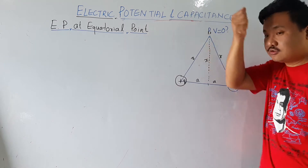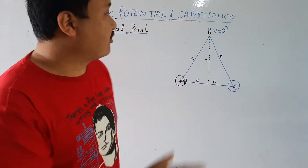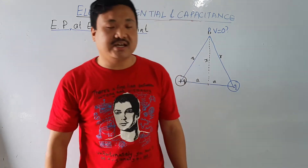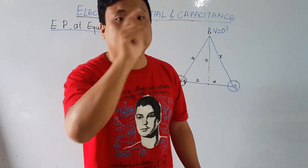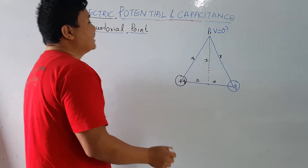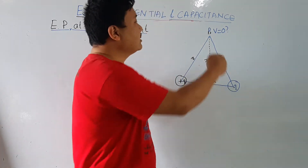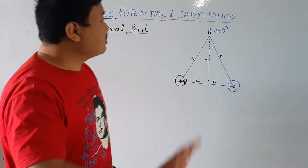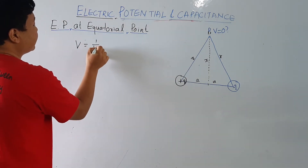We will find how much is the electric potential due to this electric dipole at the equatorial point, and also introduce the concept of equipotential surface. The equatorial point calculation is very simple and easy, and from this we are going to generate the new concept of equipotential surface. Since electric potential is a scalar quantity, I don't need to put arrows like we did in electric field in the first chapter.